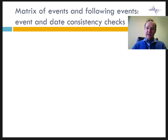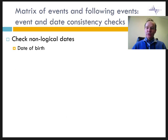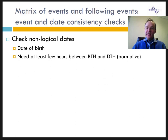These event and date consistency checks are of two kinds. The first kind is to check for non-logical dates. Are the dates of birth out of range? Examples are too many centenarians or too many people born on the 1st of January 1960, etc. To include early deaths — babies who died very shortly after birth — it is necessary to count a few hours between birth and death if the birth and death occurred on the same calendar day.